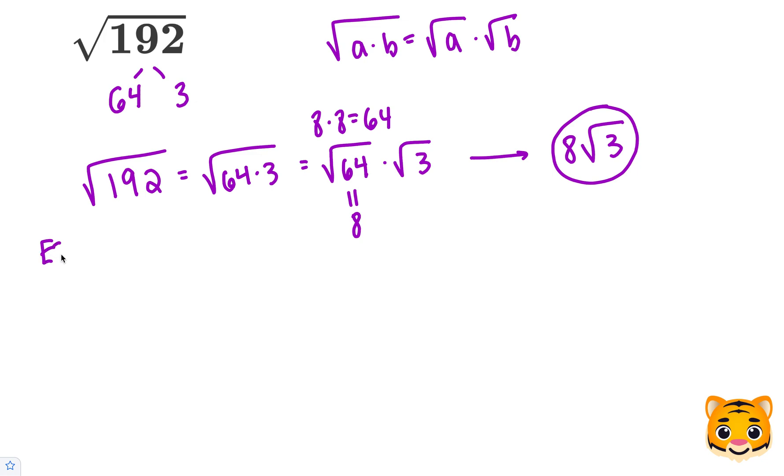Now if we want to estimate the value of the square root of 192, what we want to do is think about the perfect squares nearby. 13 squared is equal to 169, while 14 squared is equal to 196.